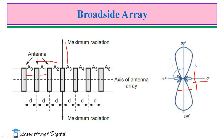The radiation pattern for the broadside array is bidirectional. From this figure, we observe that the radiation pattern of the broadside array is bidirectional. Thus, we can define the broadside array as the arrangement of antennas in which maximum radiation is in the direction perpendicular to the axis of the array and the plane containing the elements.